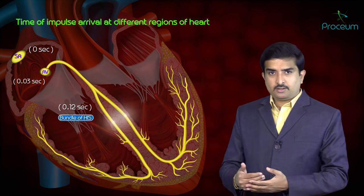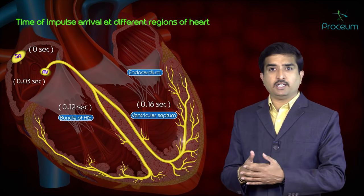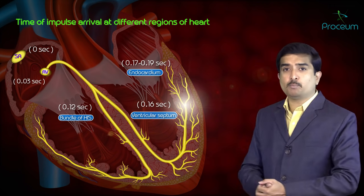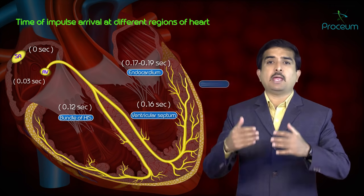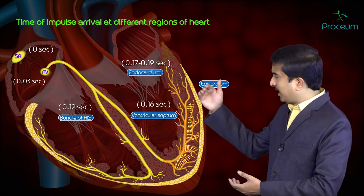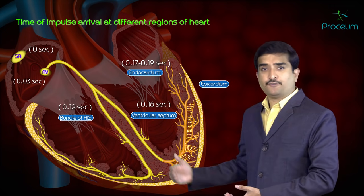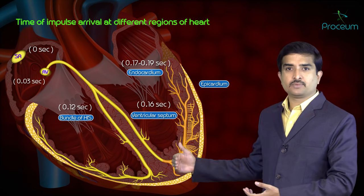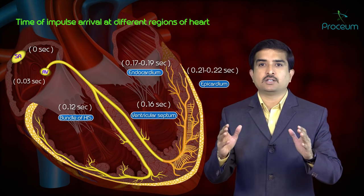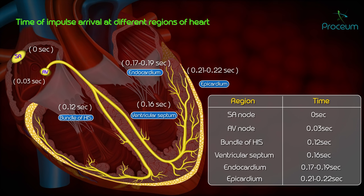From the bundle of His, the impulse reaches the ventricular septum by 0.16 seconds, the endocardium at 0.17 to 0.19 seconds, and the epicardium is the last to depolarize. The total time taken from the SA node to the epicardium is 0.21 to 0.22 seconds.